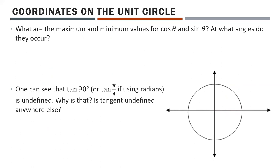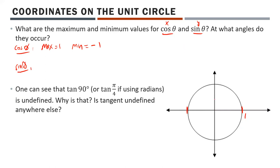What are the maximum and minimum values for cosine θ and sine θ, and at what angles do they occur? Cosine θ is code for x, and sine θ is code for y. The maximum value of cosine is the maximum value of x — the furthest right on the unit circle — which is 1. The minimum is the furthest left, which is negative 1. Similarly, the maximum of sine is the highest y value, which is 1, and the minimum is also negative 1.